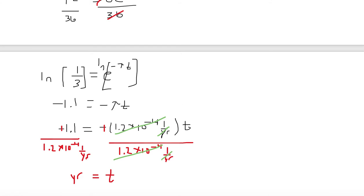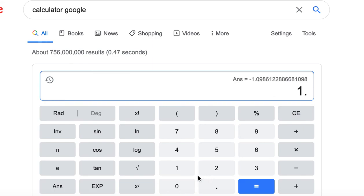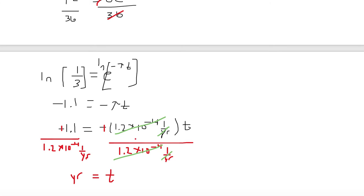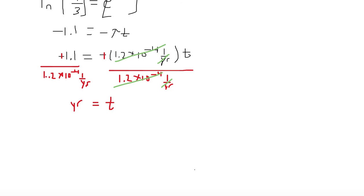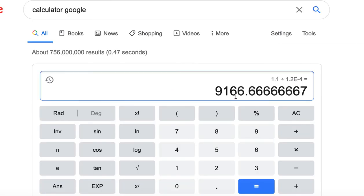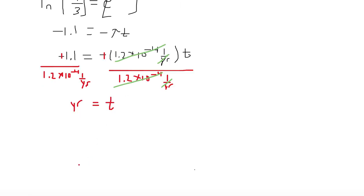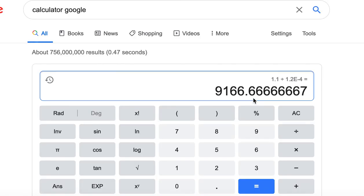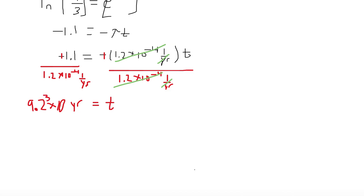Now we have 1.1 divided by 1.2 times 10 to the minus 4. So we have to clear that out. 1.1 divided by 1.2e-4, hit the equal sign, and we have 9166.6 with a bunch of 6s after it. So this 6 kicks this one up to a 7, so we have 9167. Let's see how many digits we have. We've got 2 digits for 1.1, 1.2. So we only have 2 digits. So we're going to have to round this to make it 9200. So we only keep the 9, 2. So we're going to have a value of 9.2 times 10 to the 3 years.